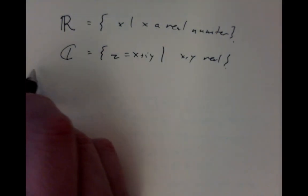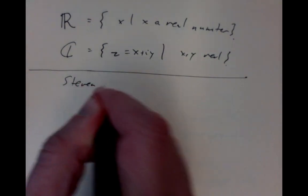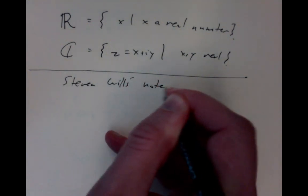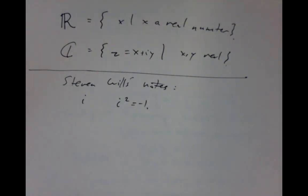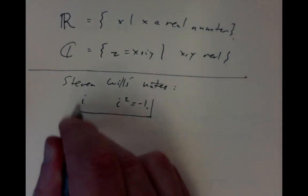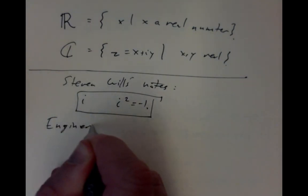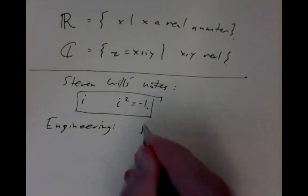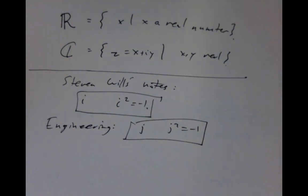I'm following the lecture notes, which are Stephen Will's notes. In his notes, he always uses i for the symbol where i squared equals minus 1. But in engineering texts, it's also often written as j, with j squared equals minus 1. Either notation is fine — whichever you prefer. I'll be pretty clear about what you mean when you start writing j's instead of i's or vice versa.